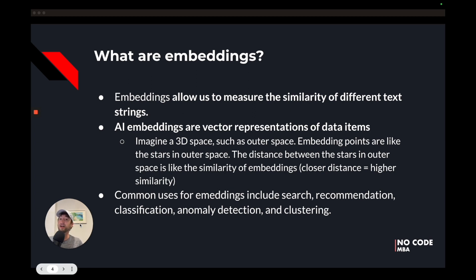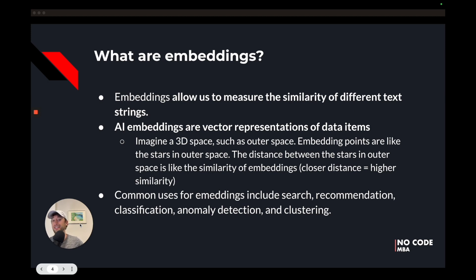One star might only be one light year away from another star, but a third star might be a hundred light years away. The star that is one light year away is closer than the one that's a hundred light years away, and it can be going in any direction — the direction doesn't matter, it's the distance that matters. With embeddings, we store our vector embeddings in a vector database. Think of the vector database like outer space, and the distance between embeddings — closer distance equals higher similarity.